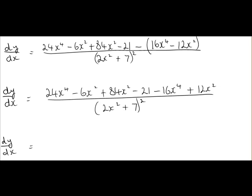Next, it's just a case of simplifying it out, so match like with like. So we have 24x to the power of 4 minus 16x to the power of 4 leaves us with 8x to the power of 4. So mark them off as you go along. Next, minus 6x squared plus 84x squared gives us 78x squared, plus 12x squared, so that's plus 90x squared, and finally we have minus 21.